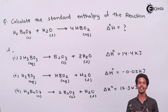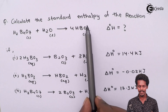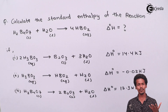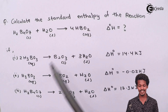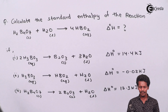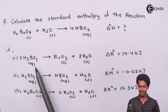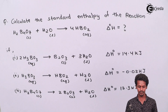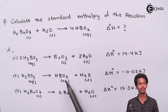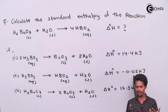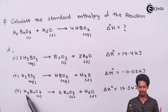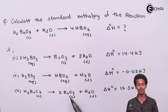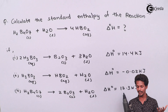The three reference reactions are arranged differently and we have to manipulate them so that their overall sum gives us the required reaction. Using Hess's Law, we can calculate the heat of formation or the change in enthalpy for this transformation. The reference reactions are: (1) 2H₃BO₃ + B₂O₃ → 3H₂O, ΔH = 14.4 kJ; (2) H₃BO₃ → HBO₂ + H₂O, ΔH = −0.02 kJ; (3) H₂B₄O₇ → 2B₂O₃ + H₂O, ΔH = 17.3 kJ.